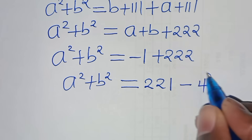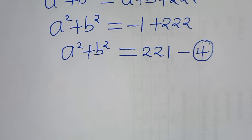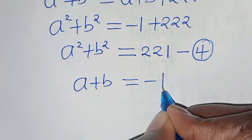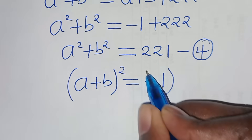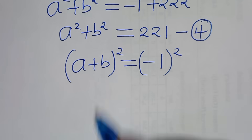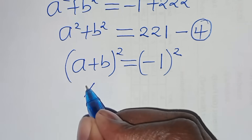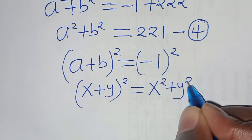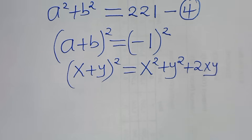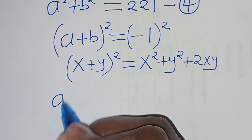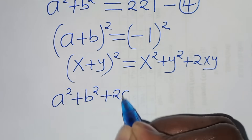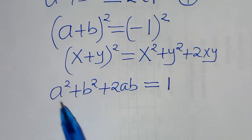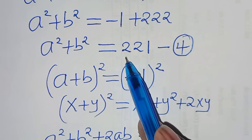Let's call this equation 4. Now, from equation 3, a plus b equals minus 1. Let's square both sides. Using the identity (x plus y) squared equals x squared plus y squared plus 2xy, we get a squared plus b squared plus 2ab equals minus 1 squared equals 1. Substituting equation 4, we have 221 plus 2ab equals 1.